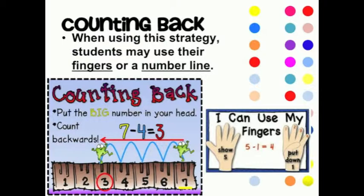When using your fingers, you show the first number on your hand, and then put down the same number of fingers as your second number. The number of fingers you have remaining is your answer. Use your fingers to solve this problem: 5 minus 4 equals...